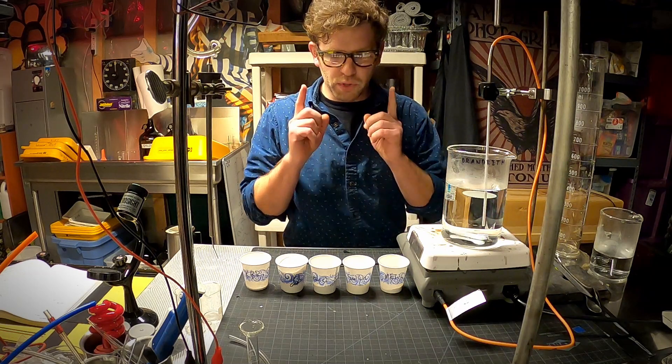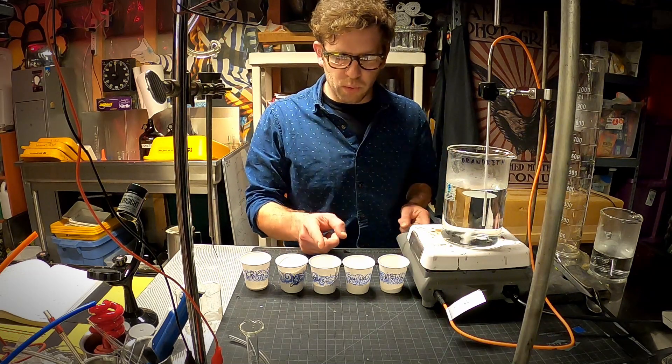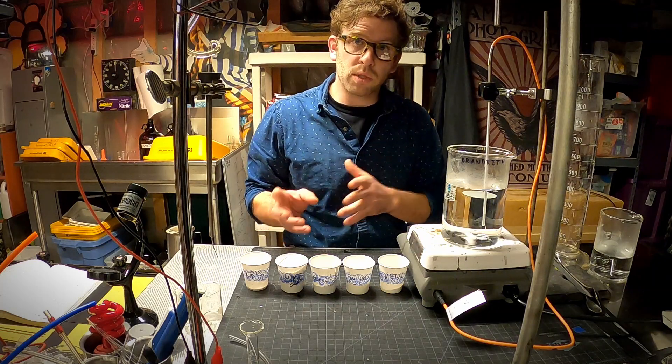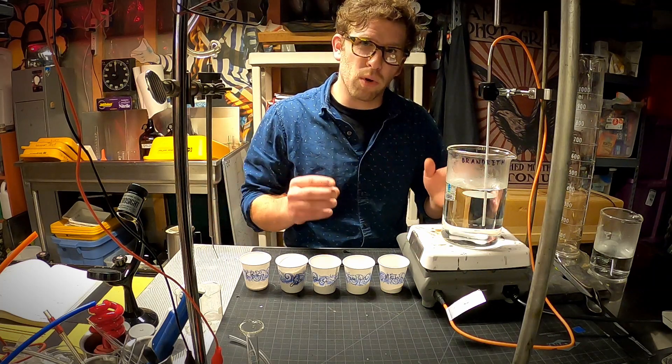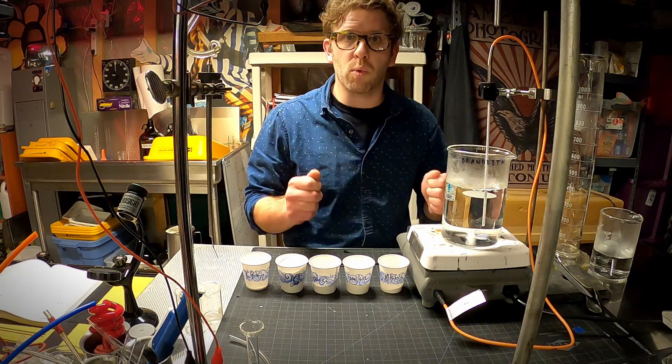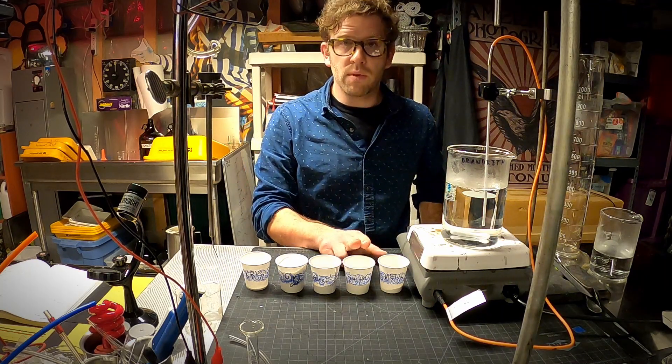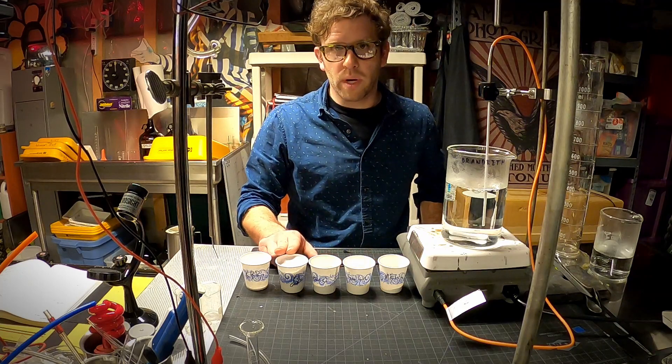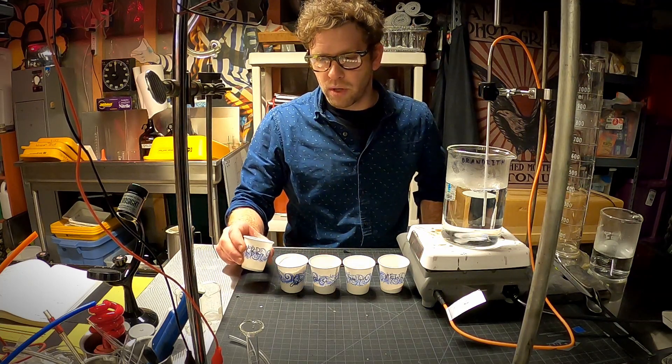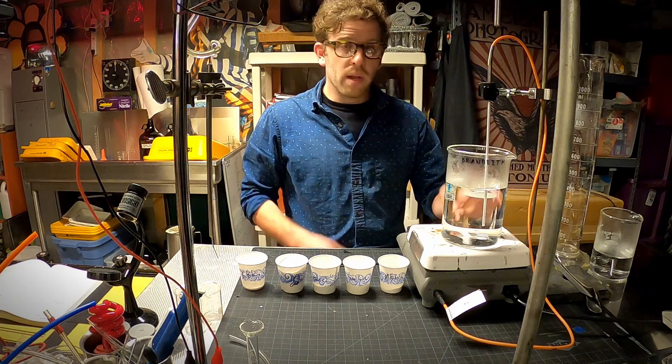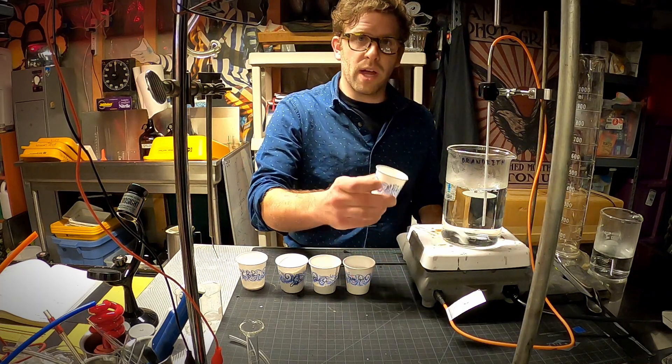First, we have our reducing agents: metol and hydroquinone. They can be used separately, but they don't work that great by themselves. They work even better when you use them in combination. We have our preservative, sodium sulfite, our accelerator, sodium carbonate, and our restrainer, potassium bromide. Now that we have this mixing, let's go ahead and just start adding our stuff.